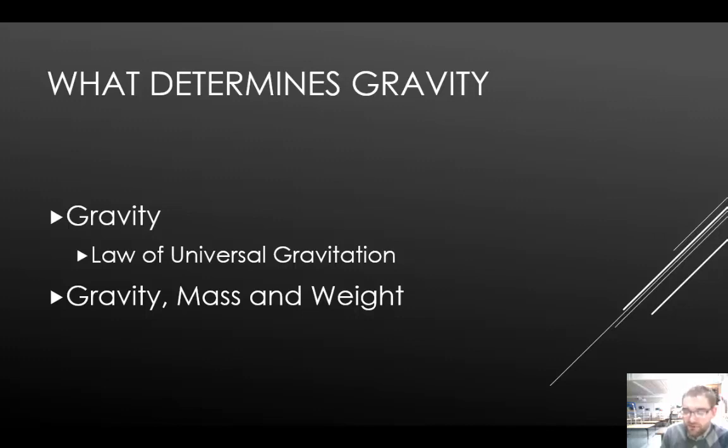The measure of the force of gravity on an object is called weight. Mass doesn't change, but an object's weight can change depending on its location. On the Moon, you would weigh about one-sixth as much as on Earth because the Moon has less mass. The pull of the Moon's gravity on you would be less.